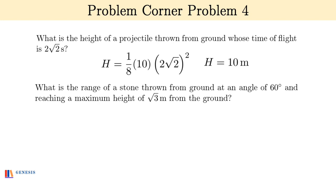Second: what is the range of a stone thrown from the ground at an angle of 60 degrees and reaching a maximum height of √3 meters from the ground? 4H = R tan θ and so R equals 4 meters. Done.